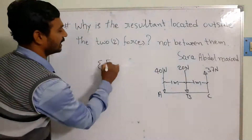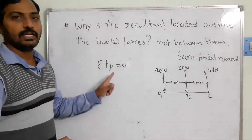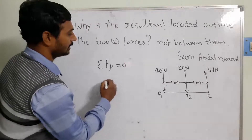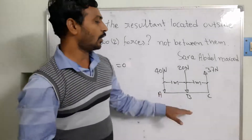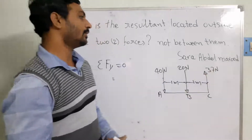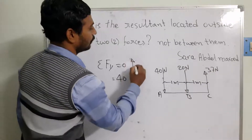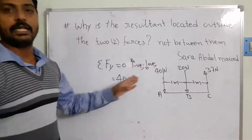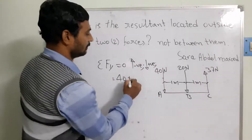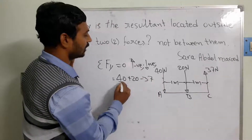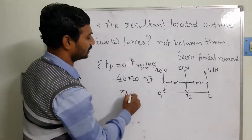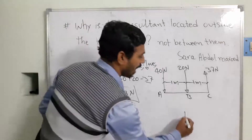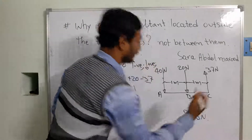Using sigma Fy = 0 and resolving the forces, I am taking downward direction as positive and upward as negative. So the resultant R = 40 + 20 − 37. That gives 40 − 37 = 3, and totally 23 Newtons. So the magnitude of your resultant component R = 23 Newtons.